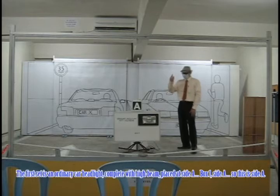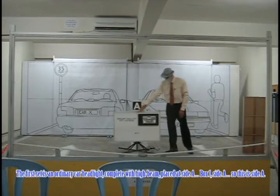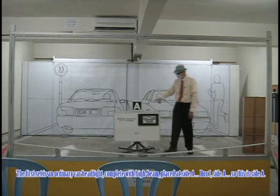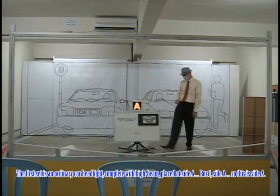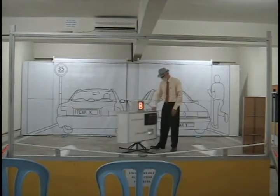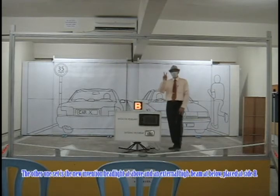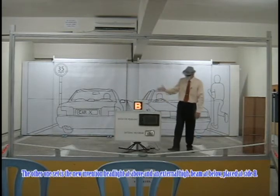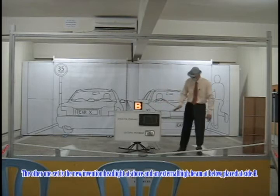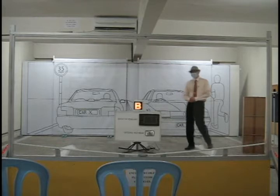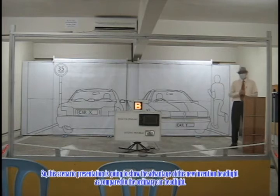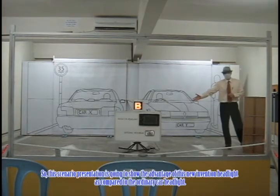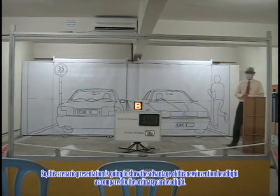The first set is an ordinary car headlight complete with high beam placed at side A. This is box 1, side A. The other set is the new invention headlight above and an external high beam below, placed at side B. So this representation is going to show the advantage of this new invention headlight as compared to the ordinary car headlight.